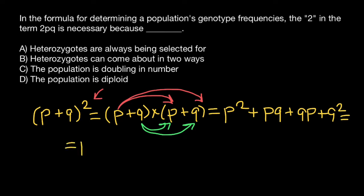So we are going to get p squared. Then pq plus qp is the same as 2pq.